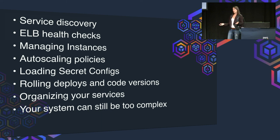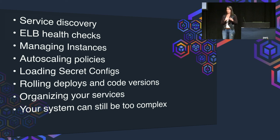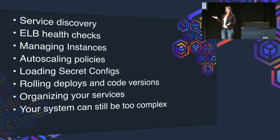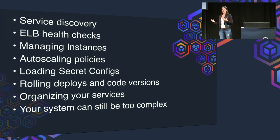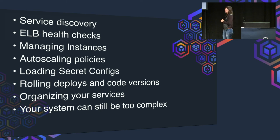Another challenge is secrets management. When you build containers, you don't build in secret information — you don't include passwords or anything private. At some point you're going to need to load in secret configurations. Amazon now has a hosted vault solution where you can store secret configurations and give ECS access to that. There are also third-party tools that help manage secret configuration. This includes AWS access keys and anything that needs to be kept under lock and key.